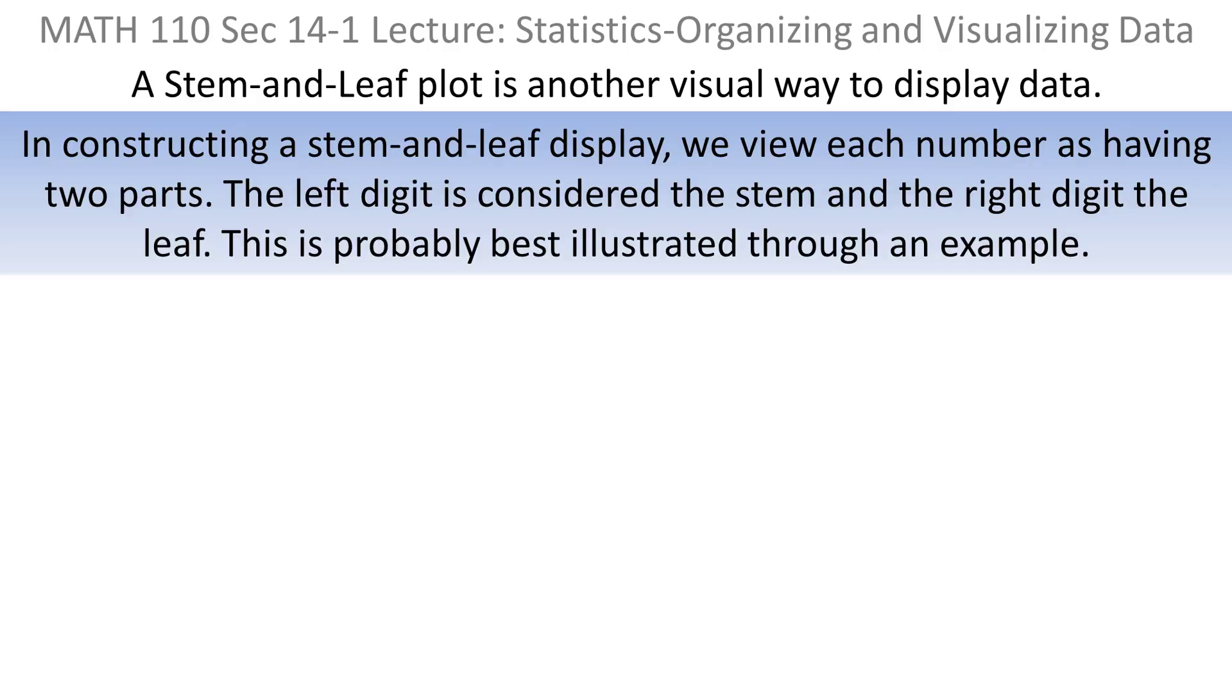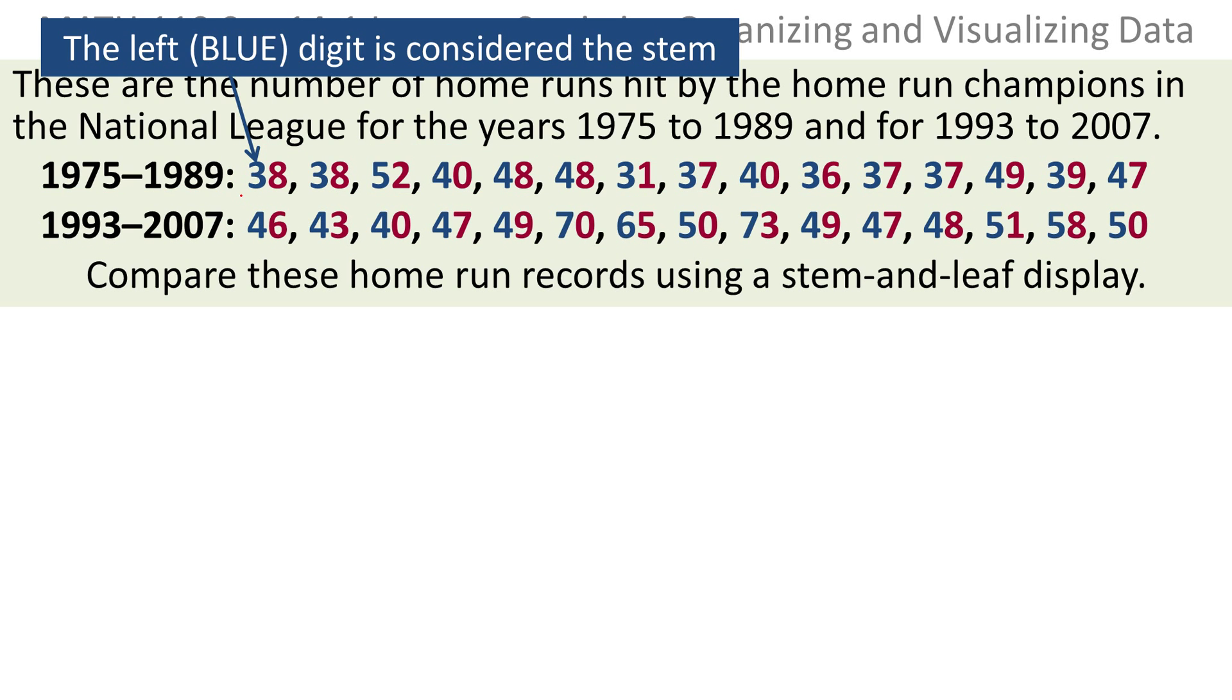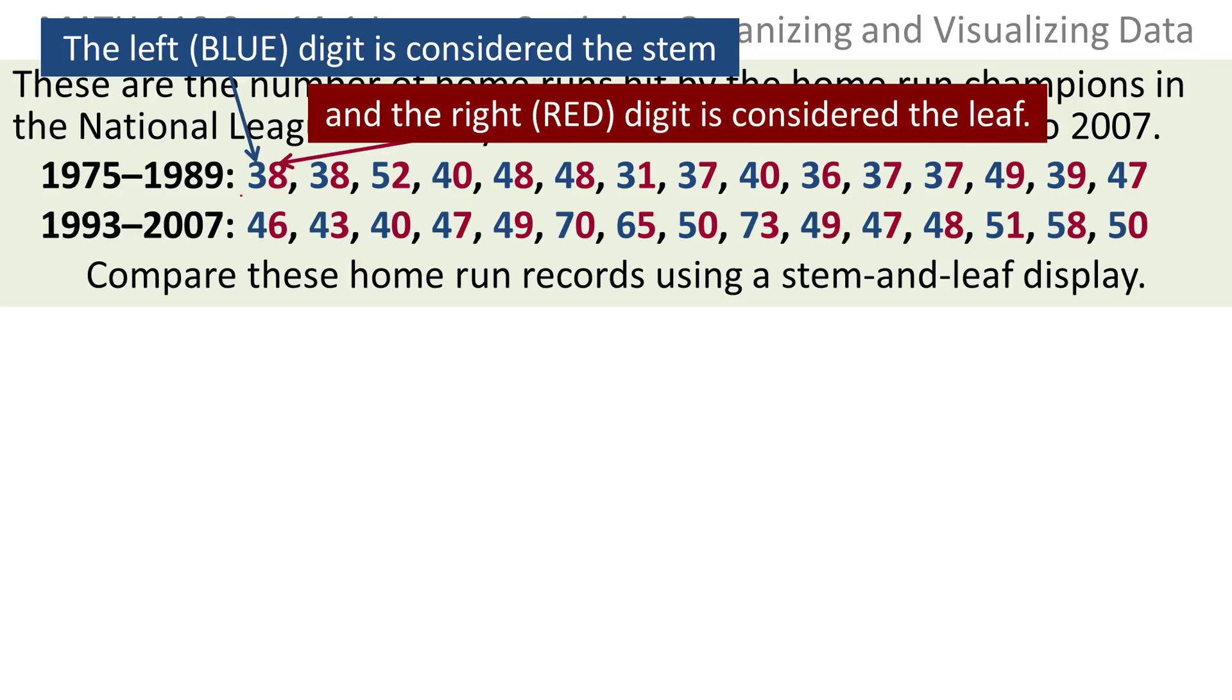A stem and leaf plot is another visual way to display data. If you construct a stem and leaf plot, you're going to view every number as having two parts. The left digit is considered the stem and the right digit is considered the leaf. These are the number of home runs hit by the home run champions in the National League for the years 1975 to 1989 and 1993 to 2007. Let's compare these home run records using a stem and leaf display. You think of the left digit as the stem and the right digit as the leaf.